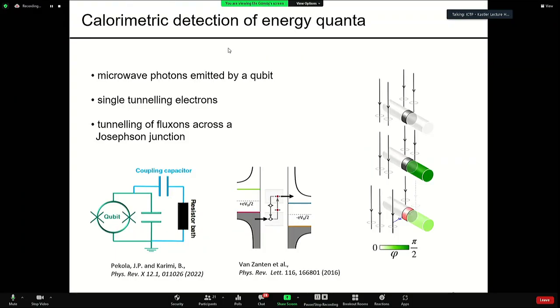Calorimetry is one of the most promising methods for detecting energy quanta in mesoscopic systems. In the quantum computing domain, there's an ongoing effort to bring the room temperature electronics to the chip level and for interfacing qubits. Having a detector which is capable of capturing microwave photons is an important milestone.